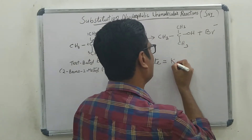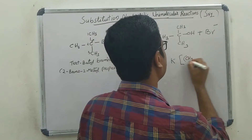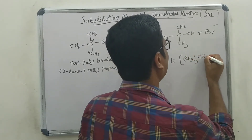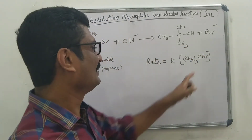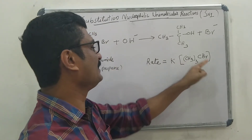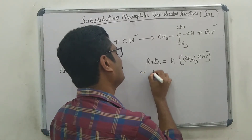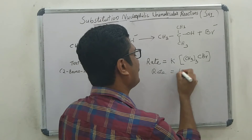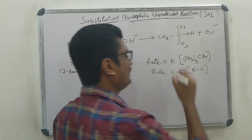Then we can write the rate expression like this: rate is equal to K into [(CH₃)₃CBr]. In general we can write: rate is equal to K into the molar concentration of the alkyl halide.